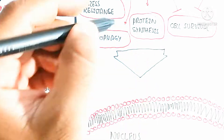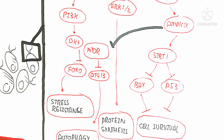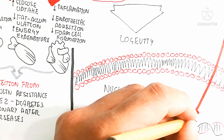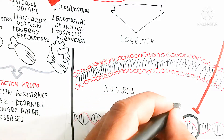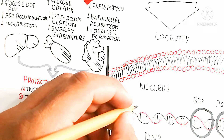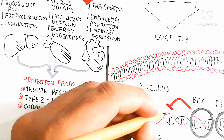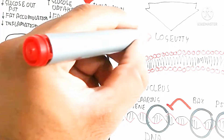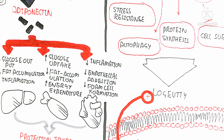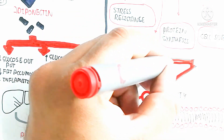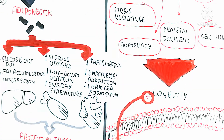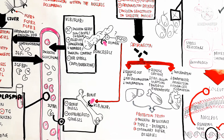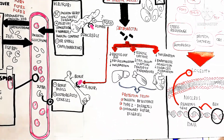Autophagy and protein synthesis increase through the ERK1/2 pathway, and cell survival occurs through inhibition of P53 and BAX proteins. The SIRT1 pathway also inhibits P53 and BAX, which are responsible for suppressing DNA repair gene expression. By relieving this suppression, longevity is promoted, cell lifespan is prolonged, and repairing mechanisms including autophagy, stress resistance, protein synthesis, and cell survival are enhanced. Thus FGF21 is important for cell growth, survival, and anti-cancer effects.